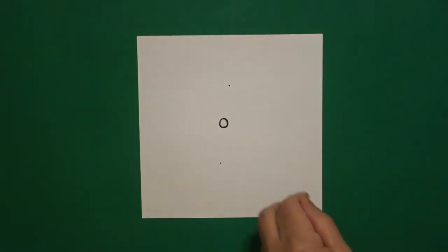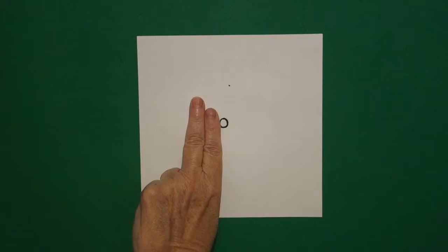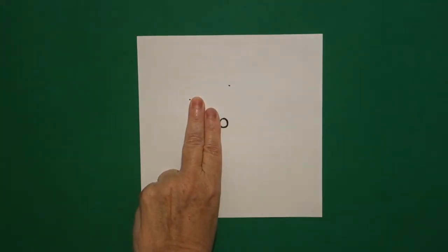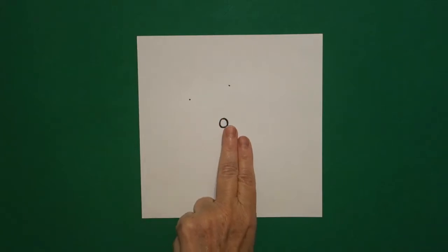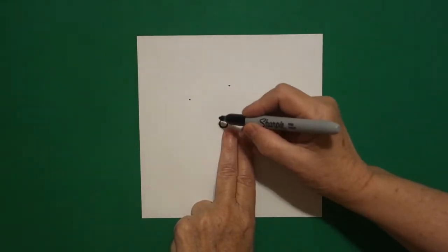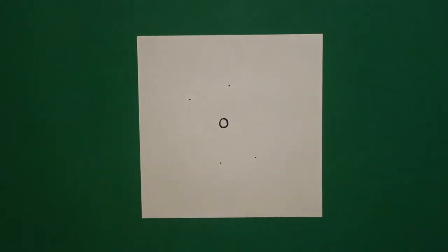Now I take two fingers on the left and I put a dot right here at the top. And I take two fingers towards the bottom, try to line it up, and put another dot.